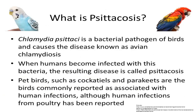Chlamydia psittaci is a bacterial pathogen that is capable of infecting birds and people. In birds, infection with this bacteria is referred to as avian chlamydiosis. When humans are infected with the bacteria, the resulting disease is called psittacosis. Although some literature will use the term psittacosis to describe infection in both birds and humans, for the purpose of this module we will refer to infection in birds as avian chlamydiosis and infection in humans as psittacosis. While many types of birds can be infected with Chlamydia psittaci, the type of birds commonly reported as associated with infection in humans are pet birds such as cockatiels and parakeets. However, human illness associated with poultry and other types of birds has been documented.